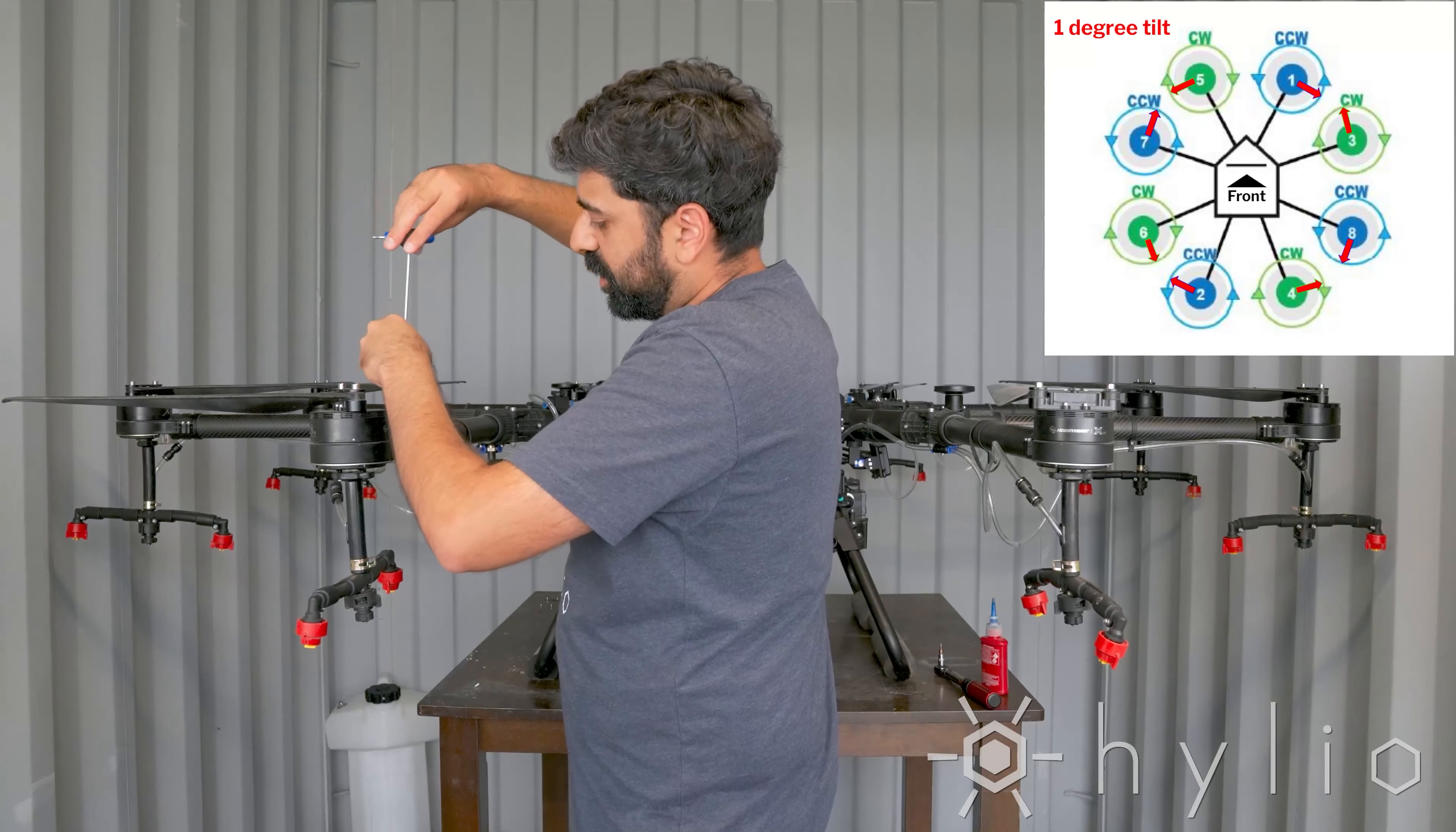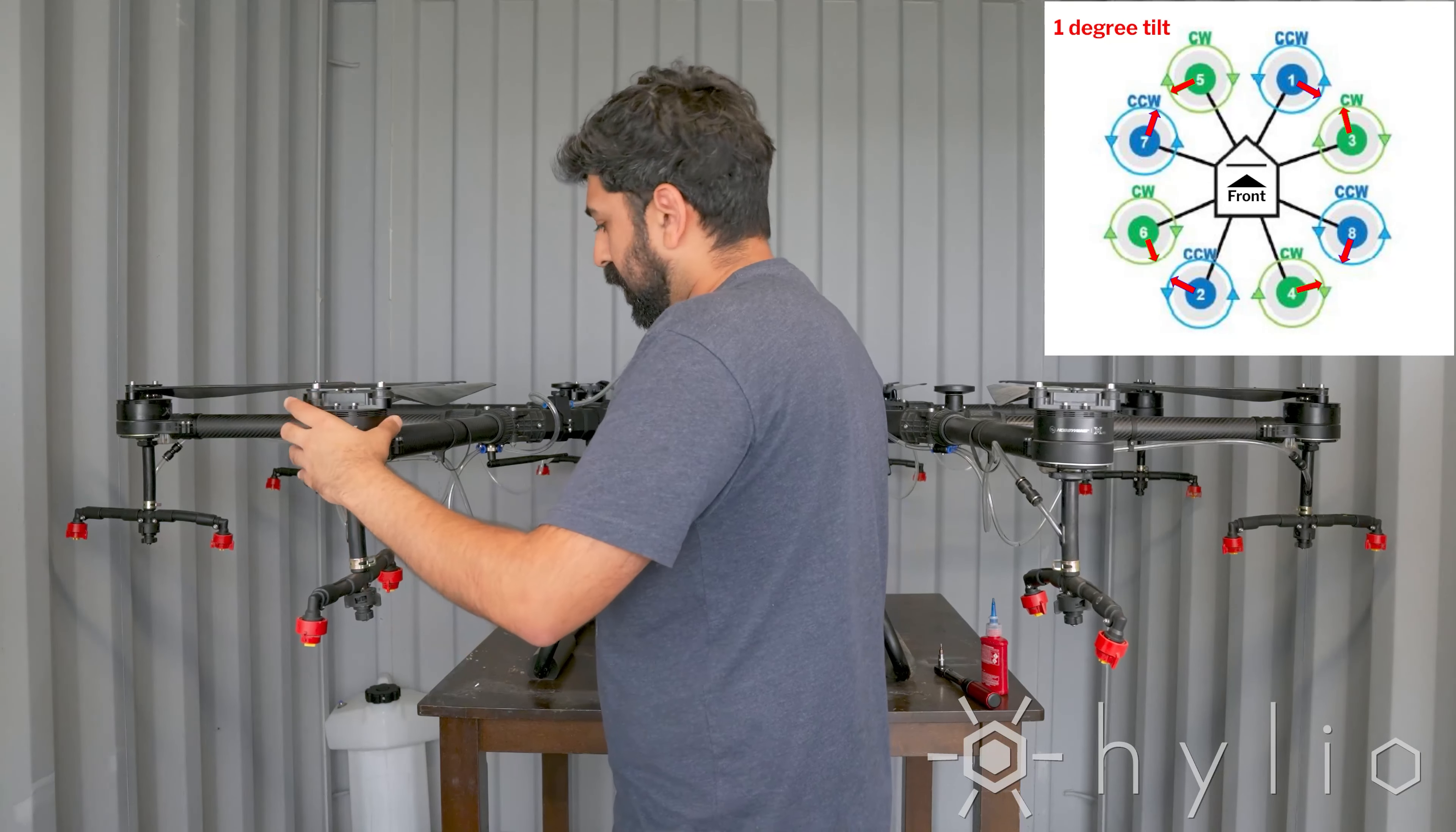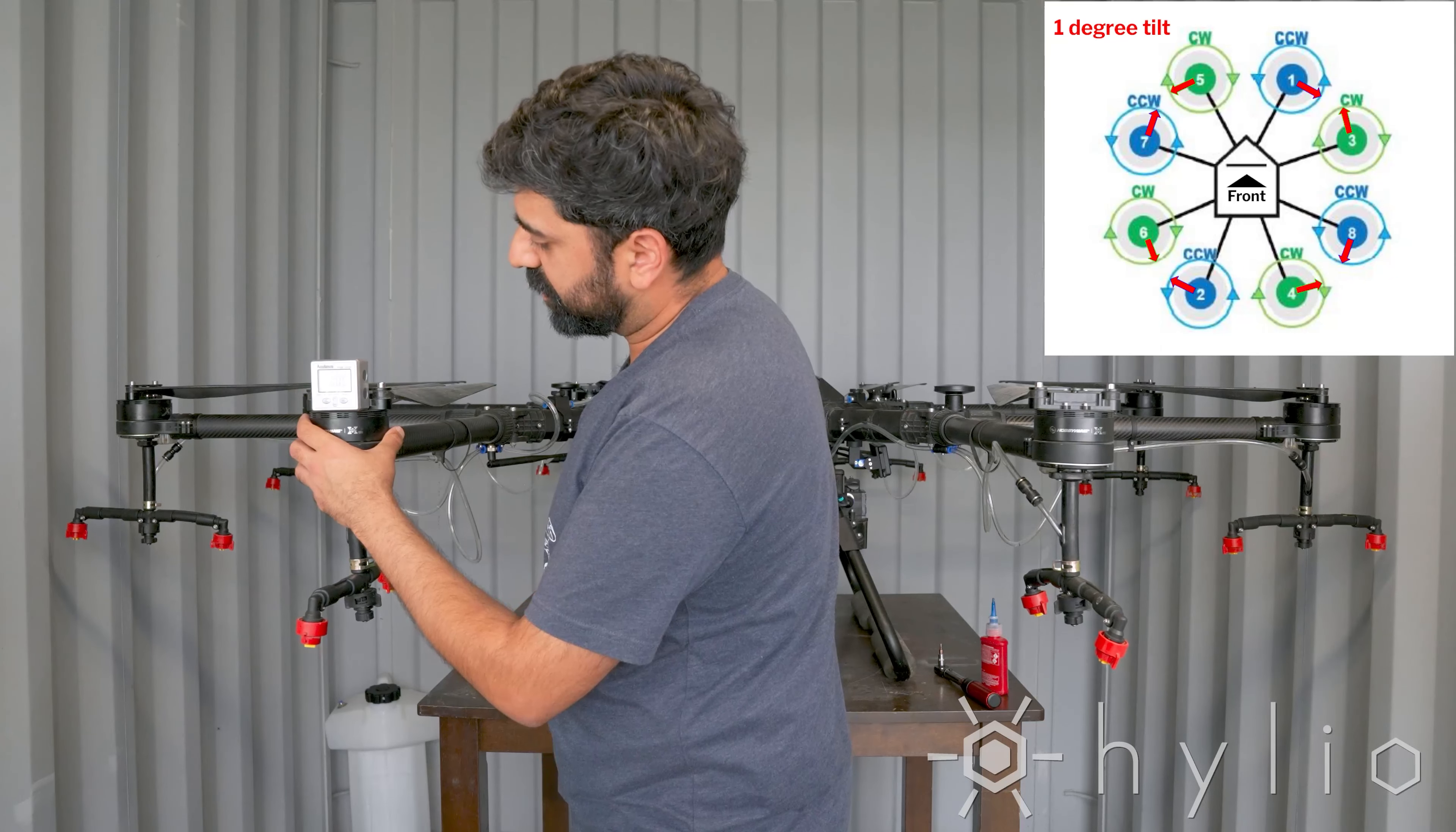Once you have tightened all four screws, you will have to reconfirm that the motor is still one degree off to the left, the same direction as the orientation of the motor.